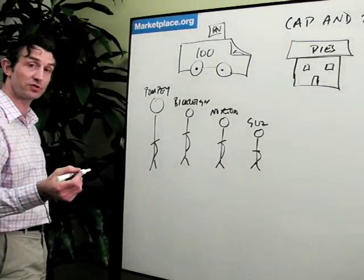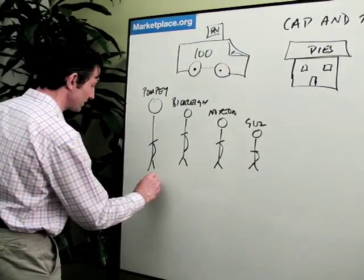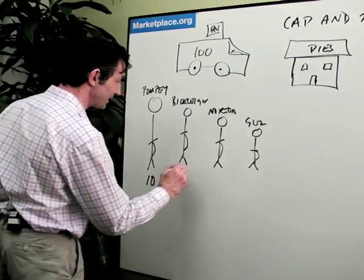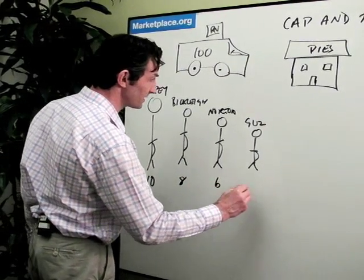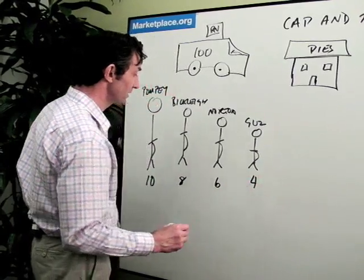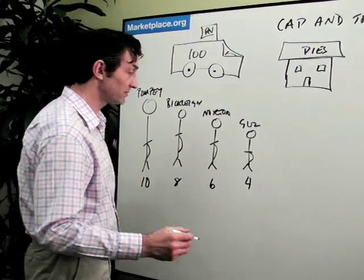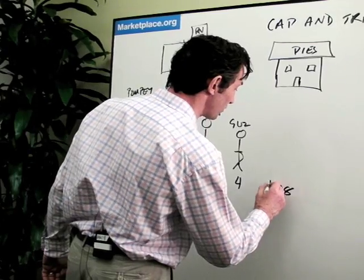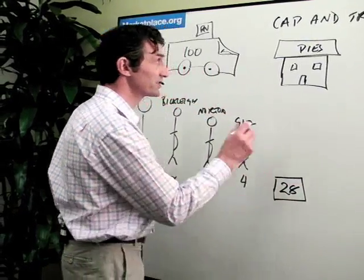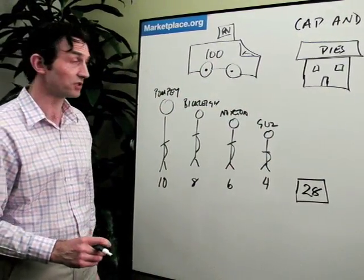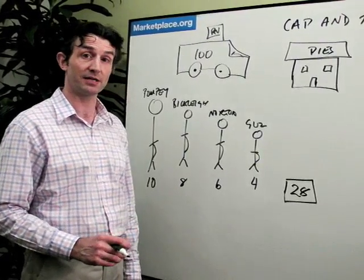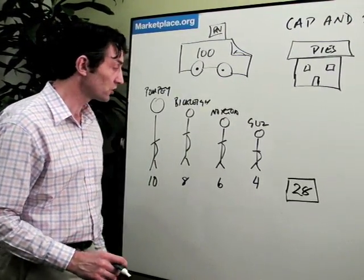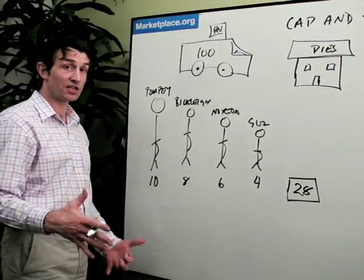So he puts a cap on the pies that these boys can eat. The most that Pompey can eat, the biggest is 10. The most that Bickley can eat is 8. The most that Norton can eat is 6. The most that Guz can eat is 4. So how many is that? Gives us 28 pies. Okay, so that is the cap. It's 28 pies. 28% of the overall amount of pies that actually go into the shop at any point each day. So now you can start to see the incentives for the lads.